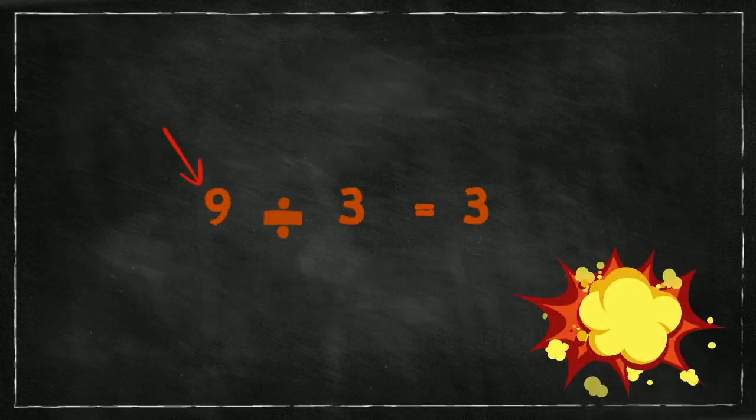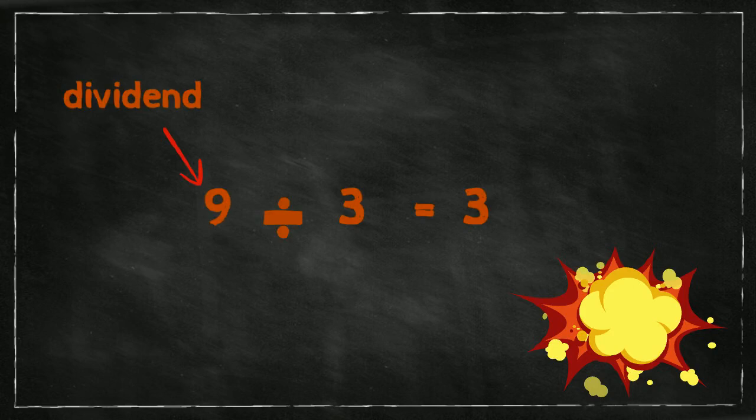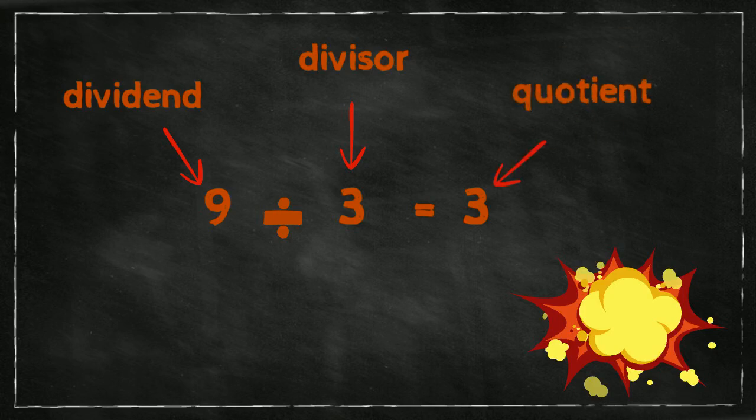You all know the different parts of a division sum. We have number 9, which is the dividend — the number that is being divided. Then we have number 3, which is the divisor — the number that is being divided by. And then number 3, which is the quotient, or the answer of the problem. And of course, we have the division sign.